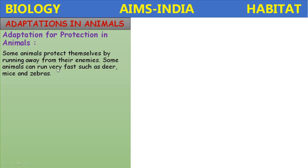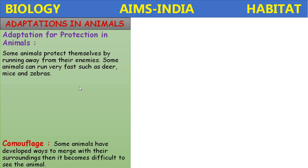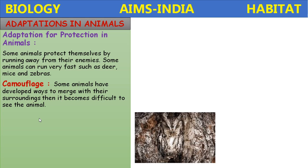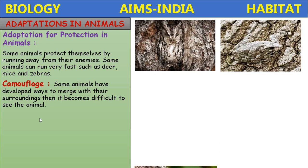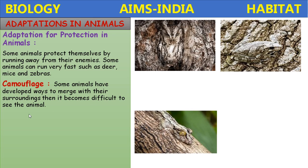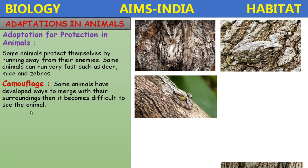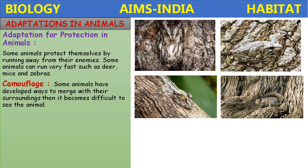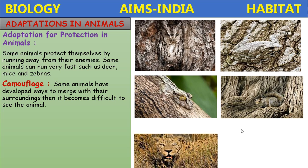Another adaptation for protection in animals: some animals protect themselves by running away from their enemies. Some animals can run very fast, such as deer, mice, and zebras. Another strategy is camouflage — some animals have developed ways to merge with their surroundings, making it difficult to see the animal. Examples include owl, frog, lizard, squirrel, and leopard.